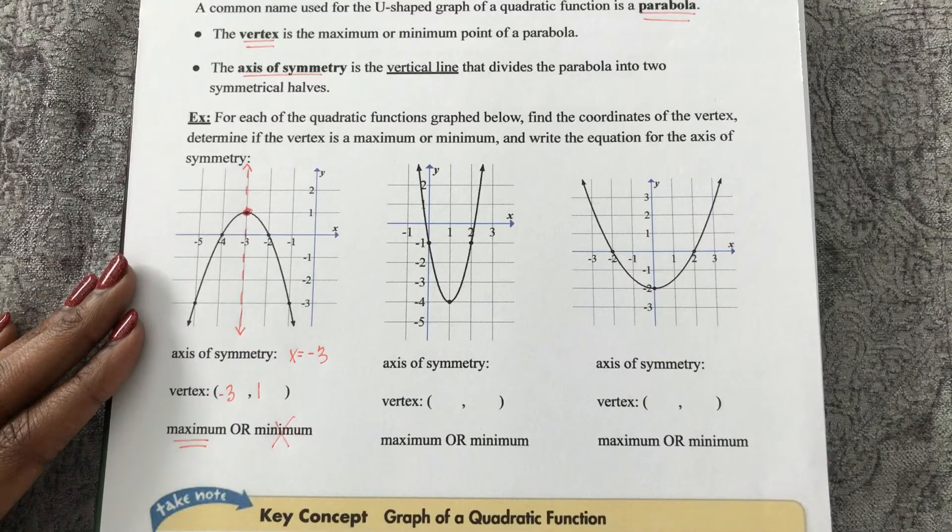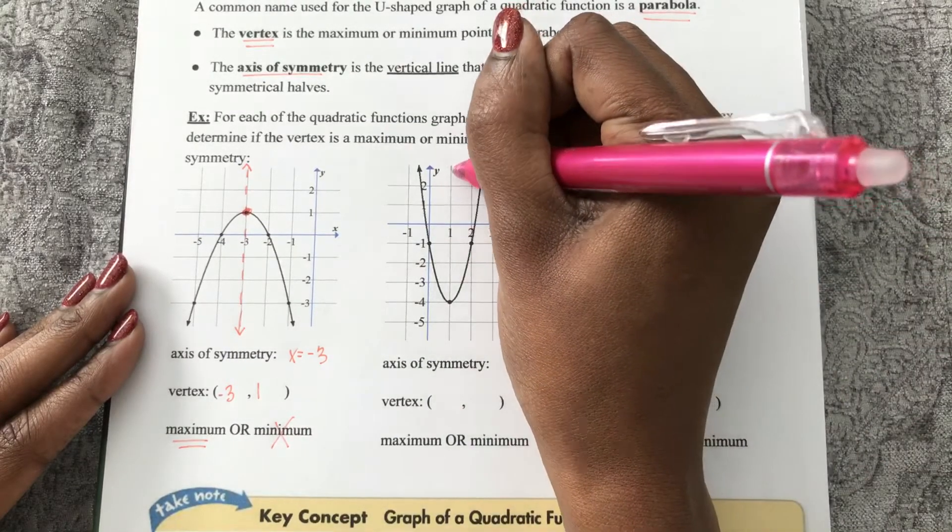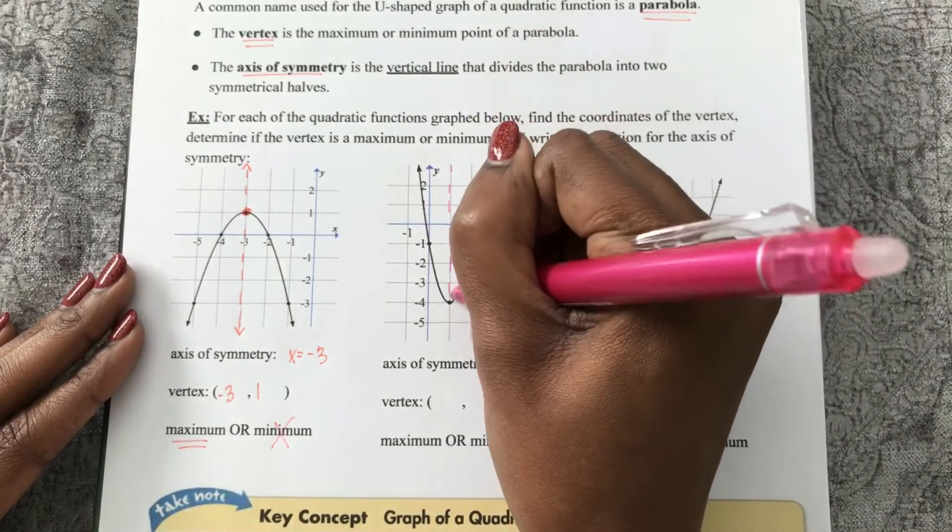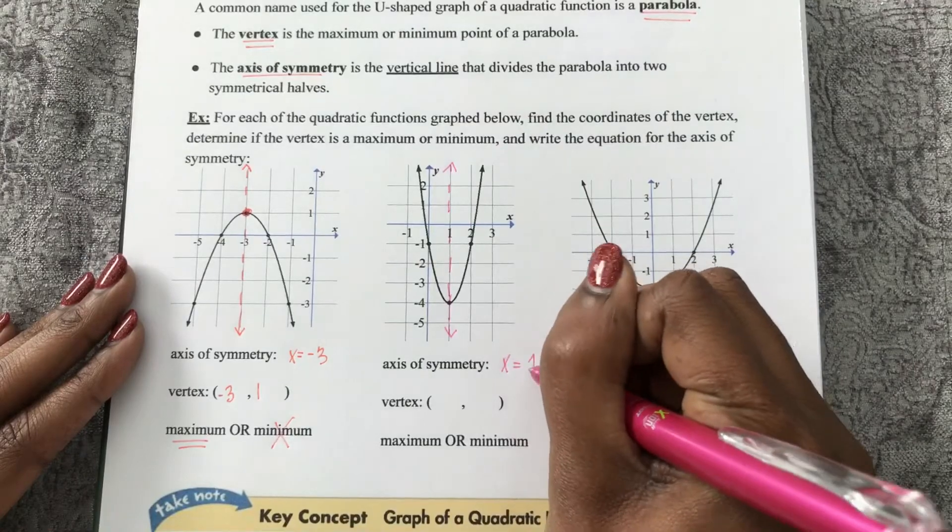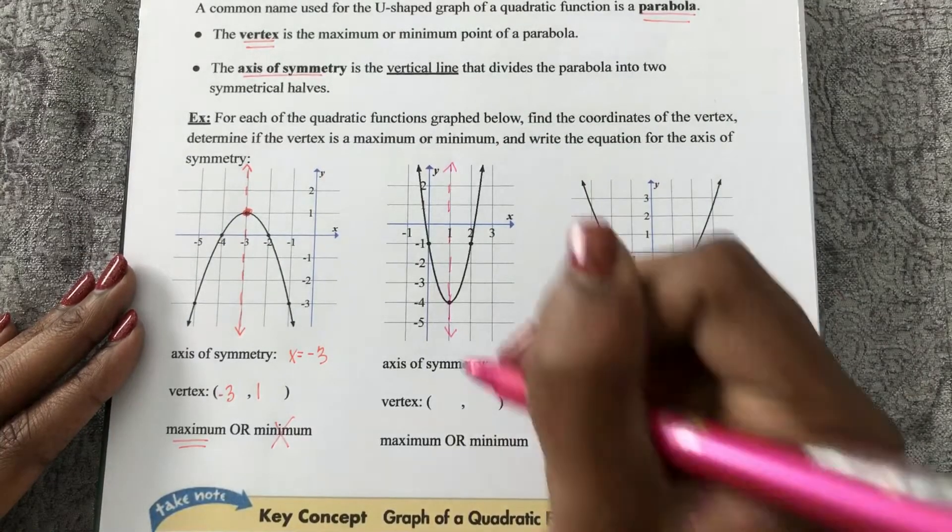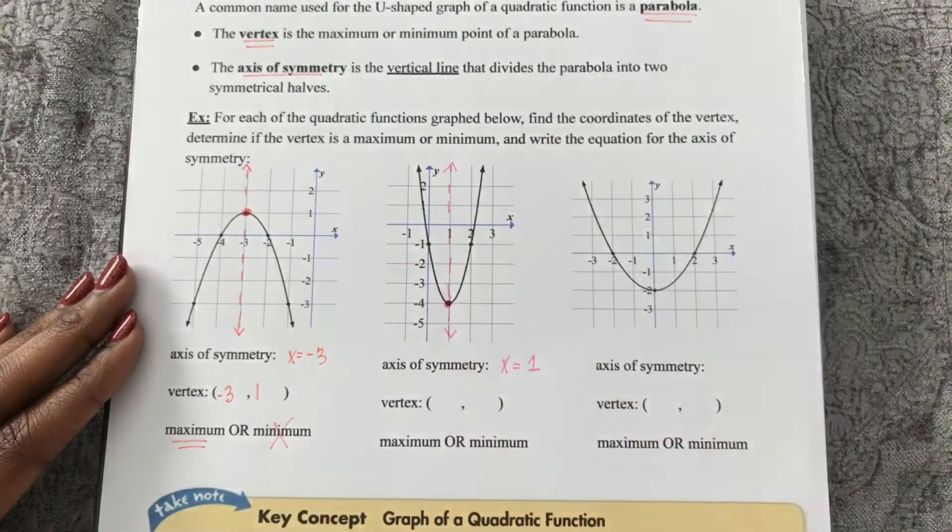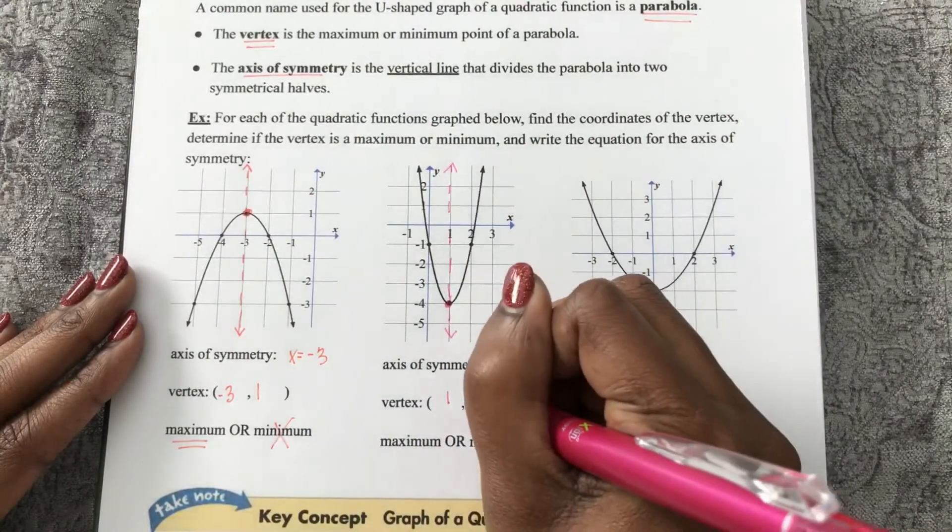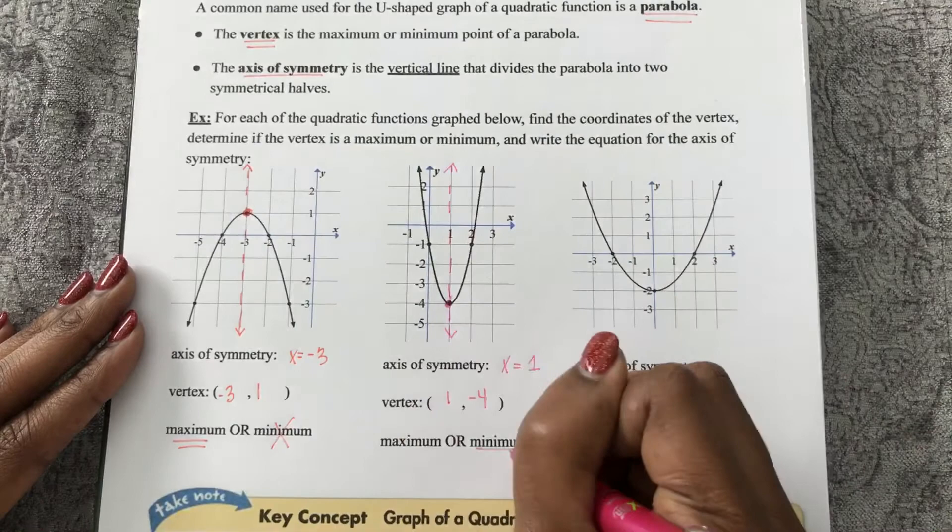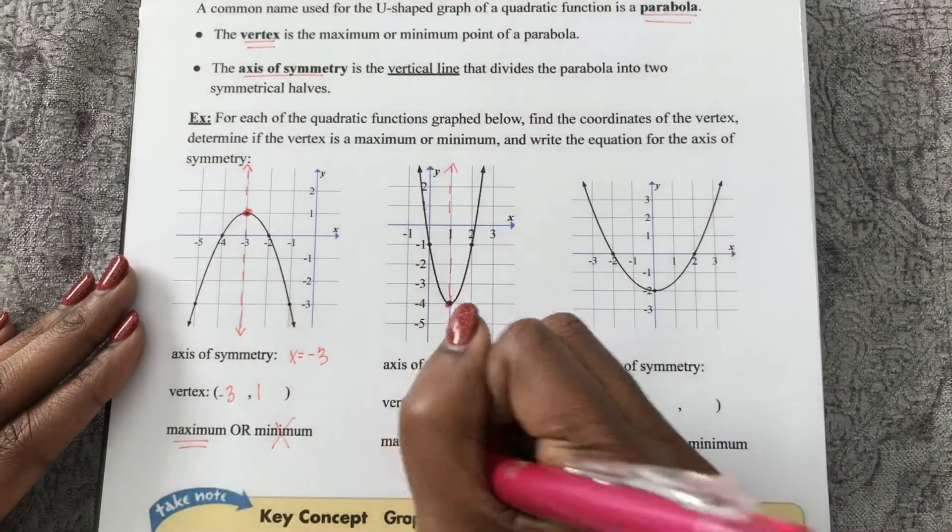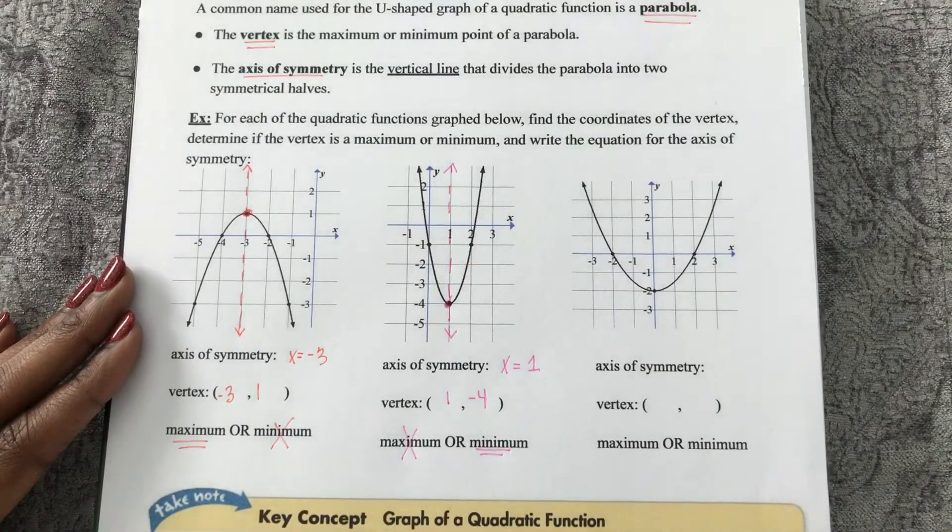So if I look at the second equation here, or graph, here is my axis of symmetry cutting down the center. The equation of that axis of symmetry is x equals 1. It goes right through this vertex, which is 1, negative 4. And I see that this is a minimum or lowest value because all of my y values go up from there.